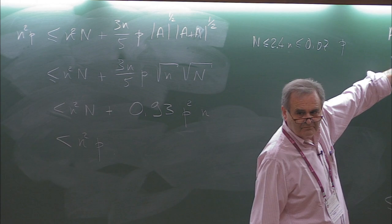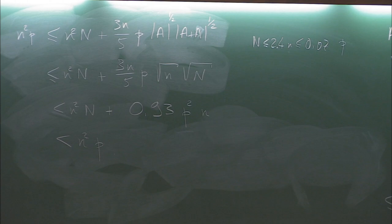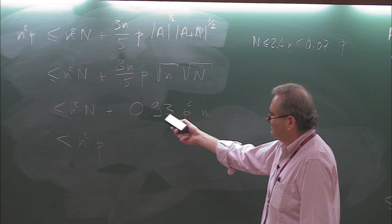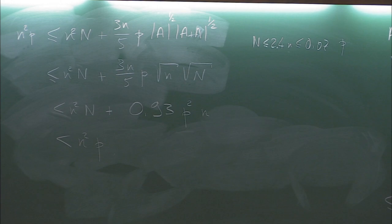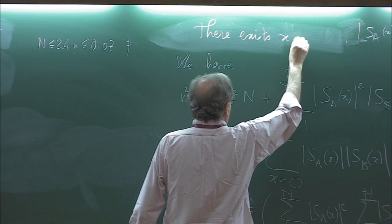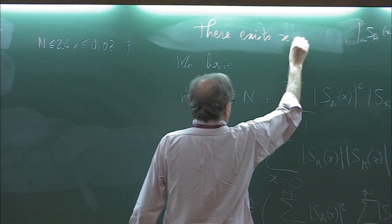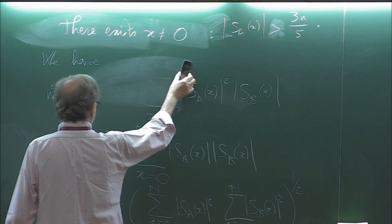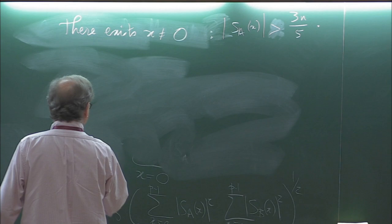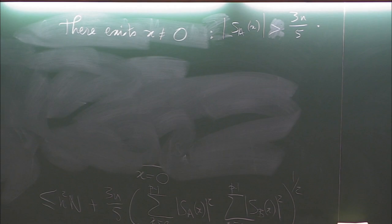So what we have proved is that there exists x different from zero such that |S_A(x)| is larger than 3n/5. You use Parseval twice — it's not very complicated — and you just take the square root, which works well. You can improve a bit on that and get a slightly lower coefficient, but if you want a coefficient which is not too bad, it's better to stay with 2.4.